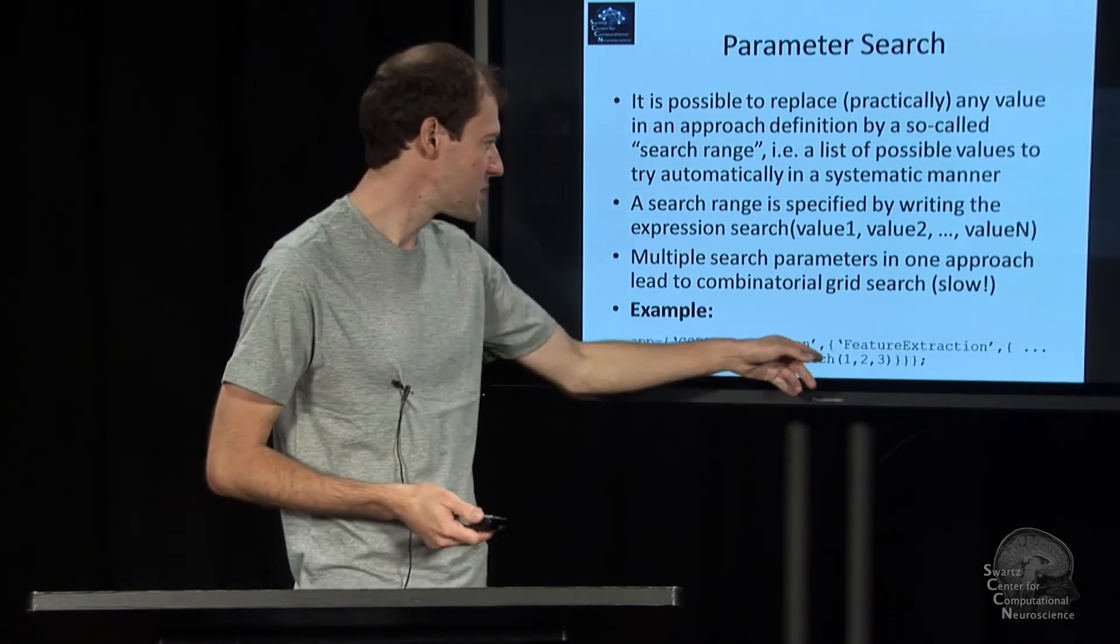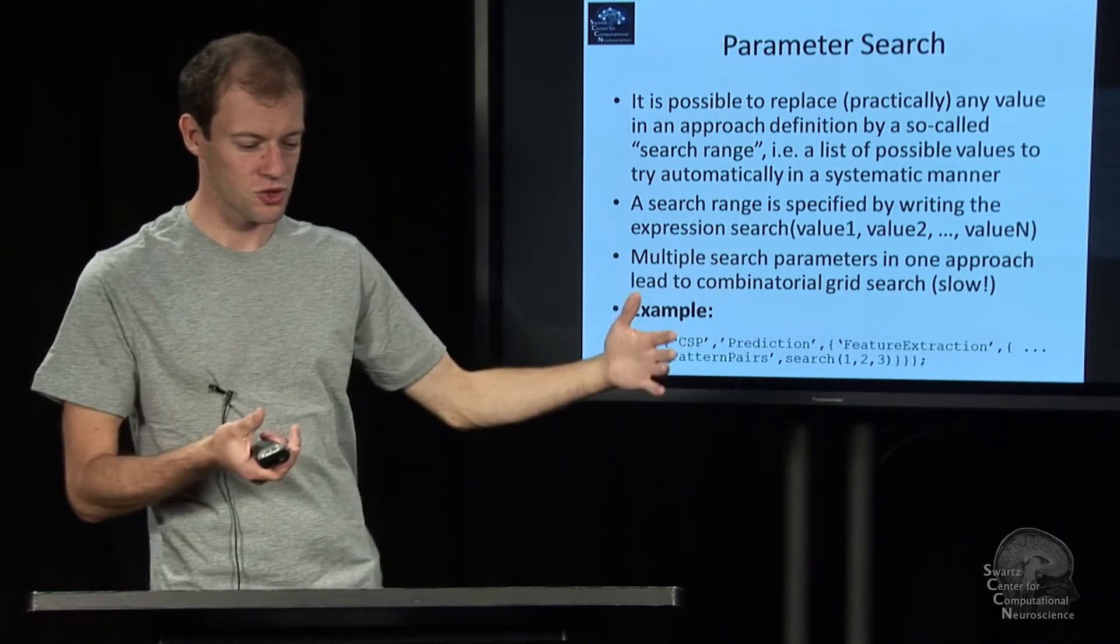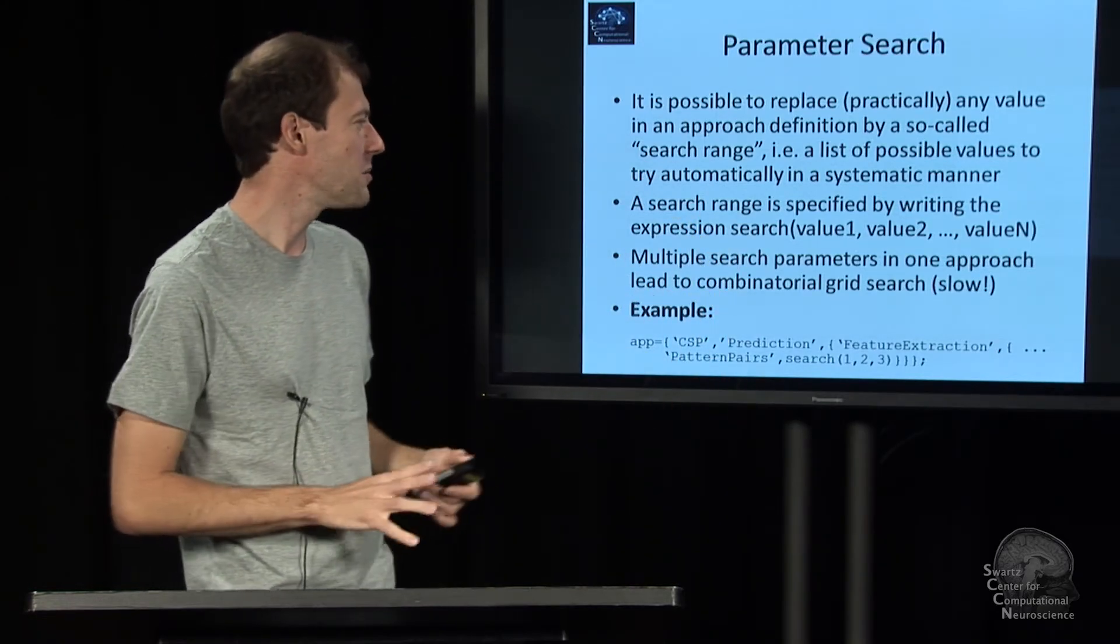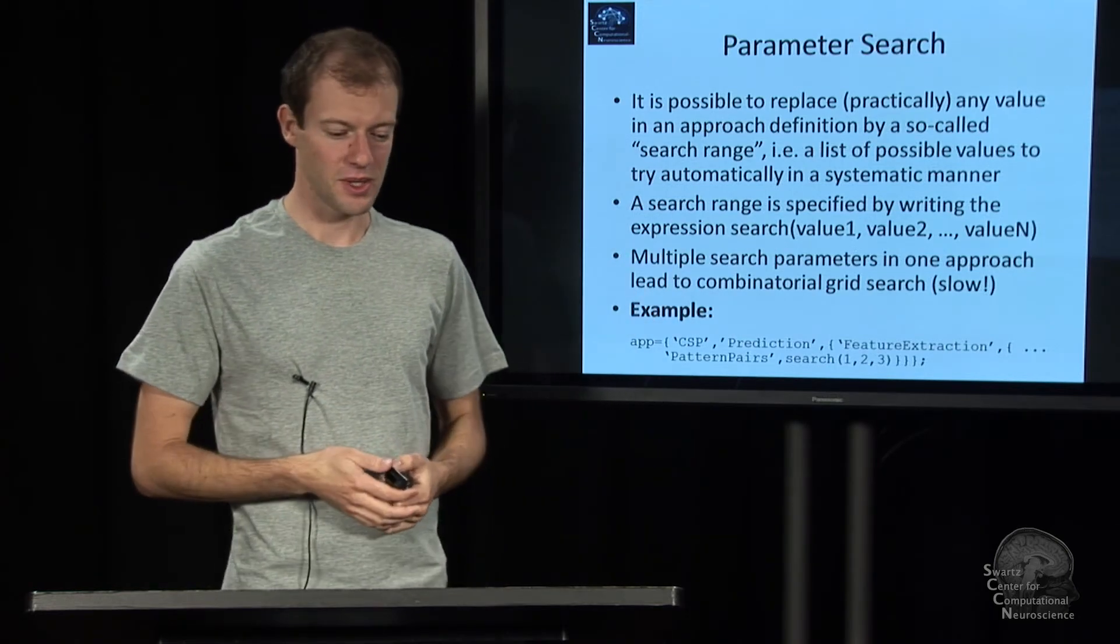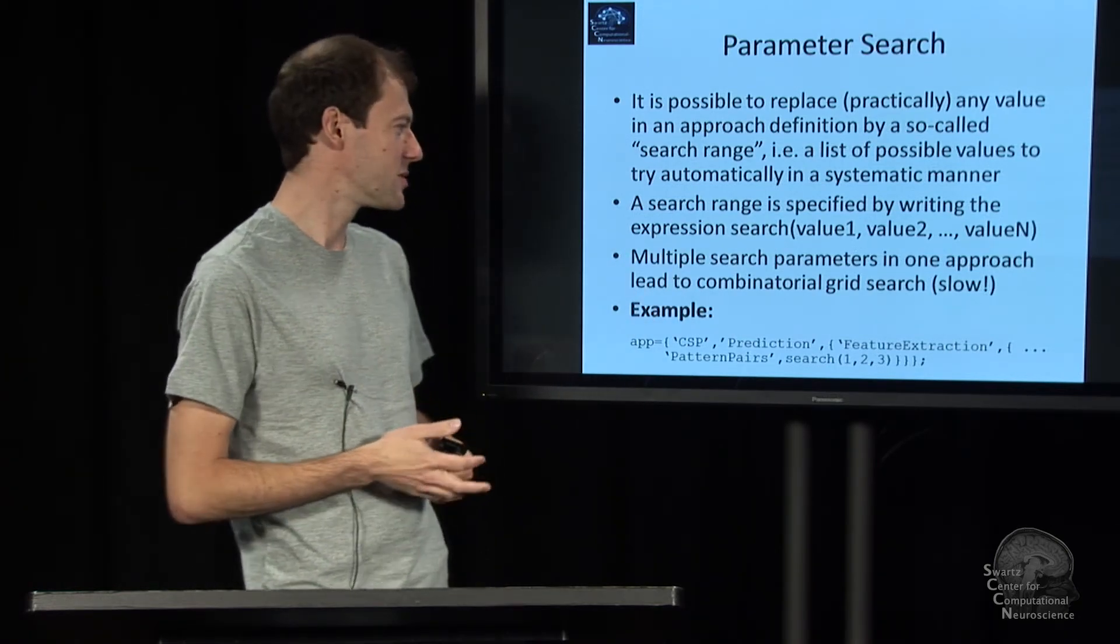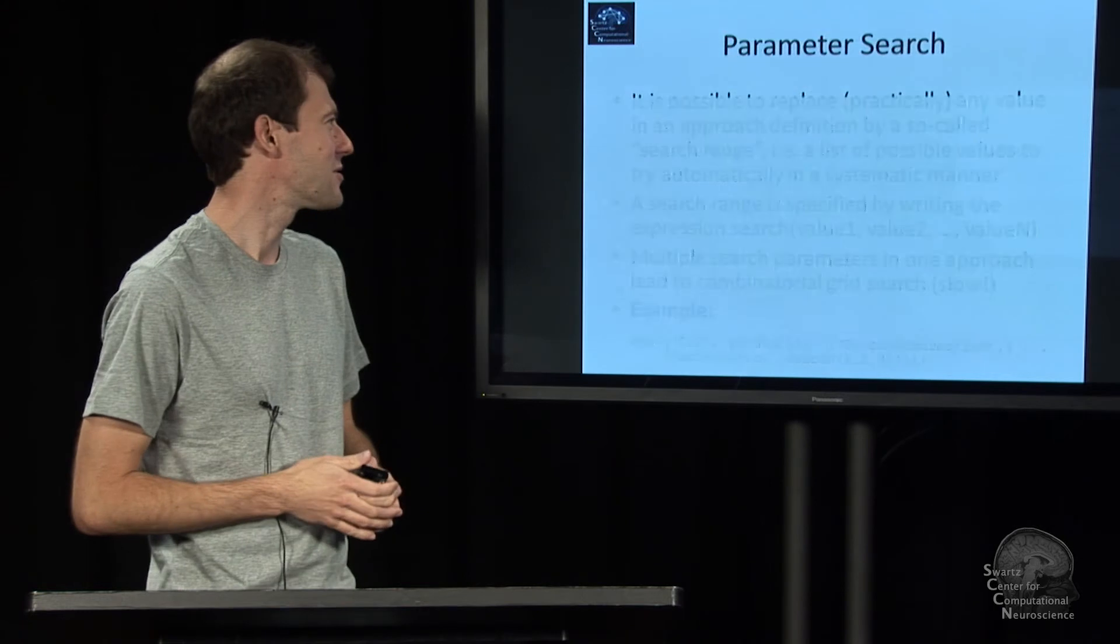And of course you can use this in multiple places and then it will search over all combinations of these parameters, which can be pretty slow if you really did that and hope to finish in five minutes or something like that. And so that is actually already sort of the most advanced feature in the whole scripting business. And it basically concludes this brief overview of how to do scripting in the toolbox.